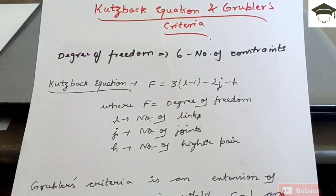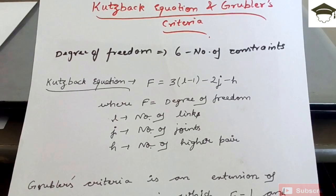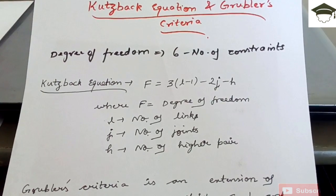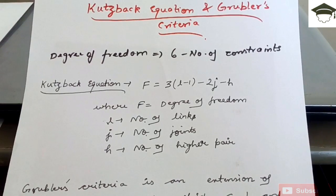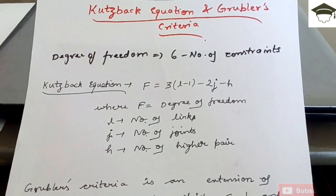Now Kurtzbach equation is for a particular mechanism, that is the complete mechanism, where F equals three into (L minus one) minus two j minus h, where F is the degree of freedom, L is the number of links, j is the number of joints, h is the number of higher pair.